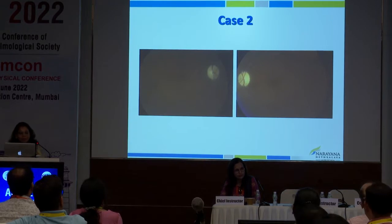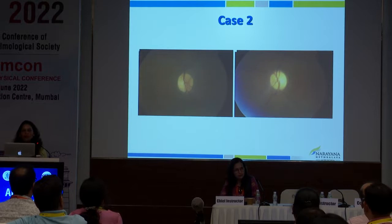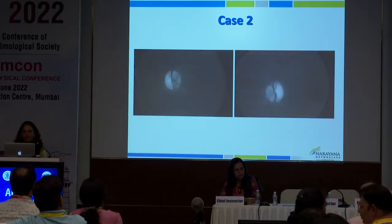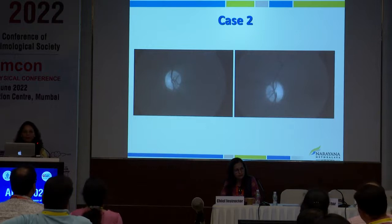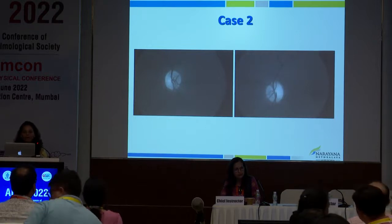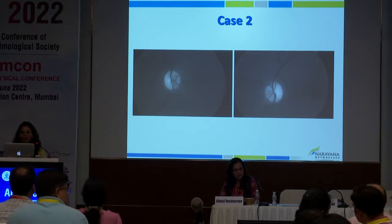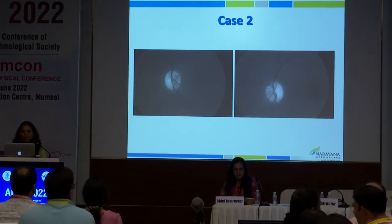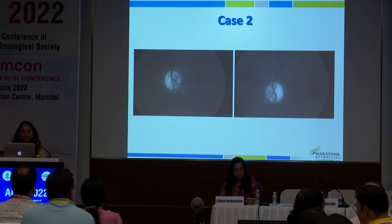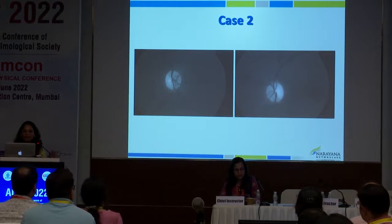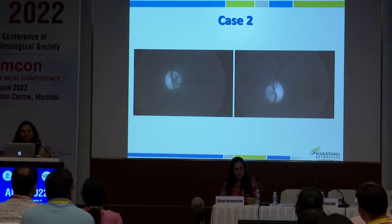When evaluating a disc, always use magnification first, and secondly use red-free. Red-free makes pale areas look much paler and red areas look redder, helping differentiate between eyes. But note: the amount of pallor does not correlate with visual acuity. A patient can have a pale disc but normal vision. It just tells you whether there is pallor or not.